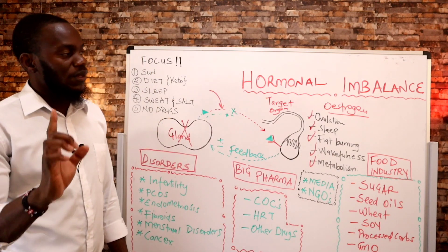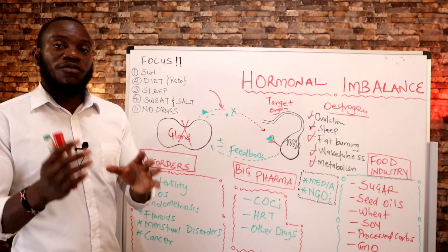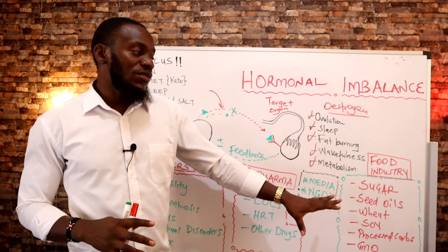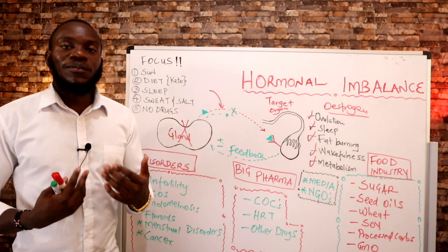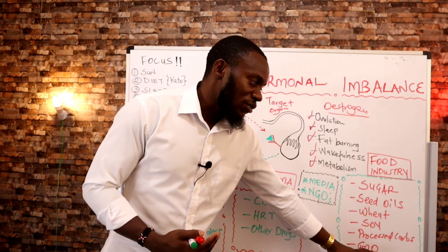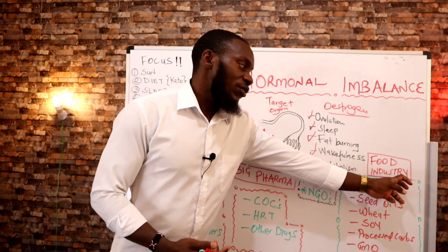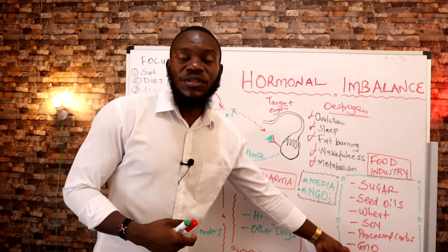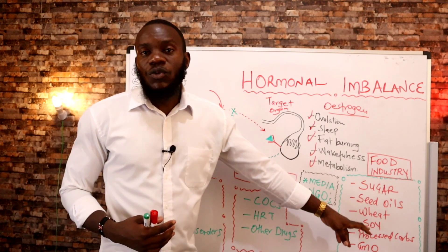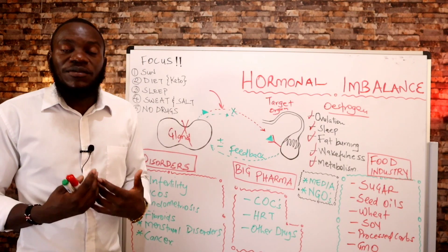The system wants women weak and capitalizes on women's emotions. There are three systems at play: the media, the food industry, and big pharma — all working against women. The food industry knows women are emotionally attached to sugar and brings them sugar, seed oils, wheat products, processed foods, and GMOs. The media markets these food products through television and social media, luring women into buying and consuming these foods.